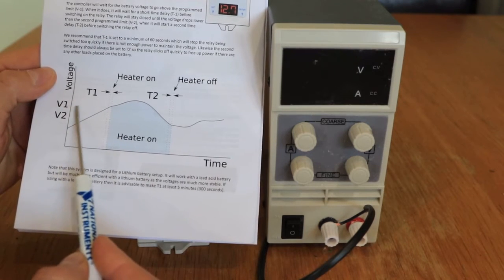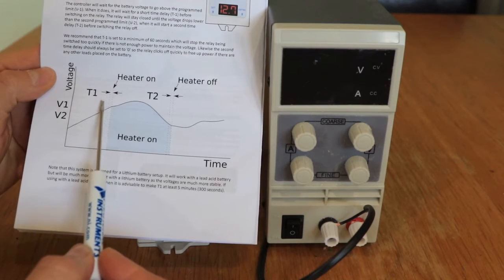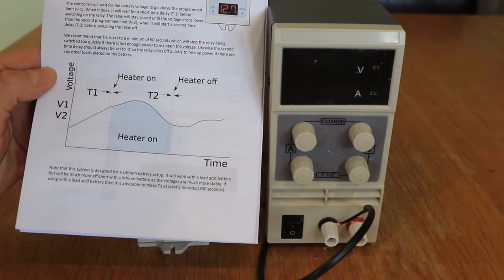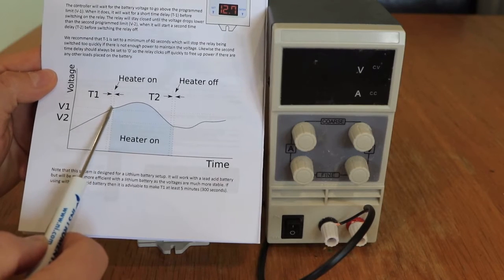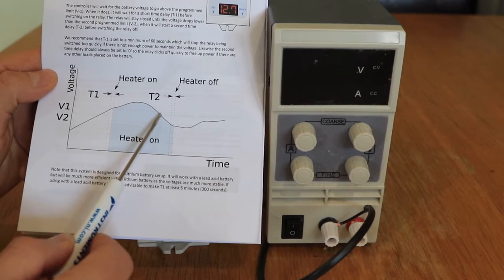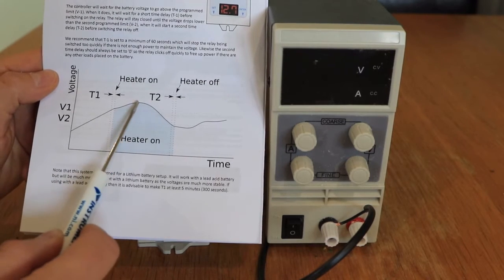We've programmed V1, which is a turn on voltage. This then triggers a time delay, so the controller is going to count down a time between the voltage level being reached and the relay actually turning on. It then turns the relay on, which turns the heater on. This is the point where the heater is heating and we've got lots of energy coming in, for example from the sun.